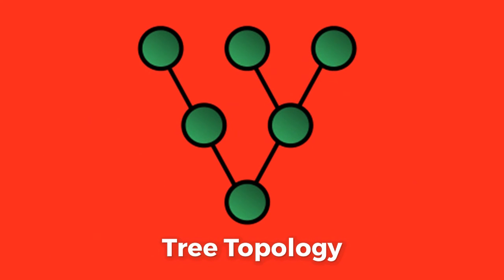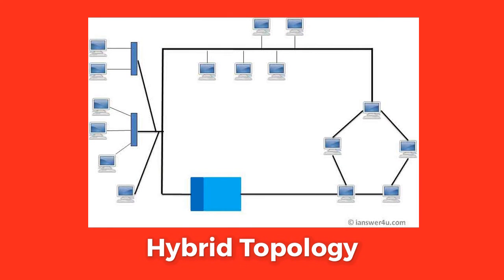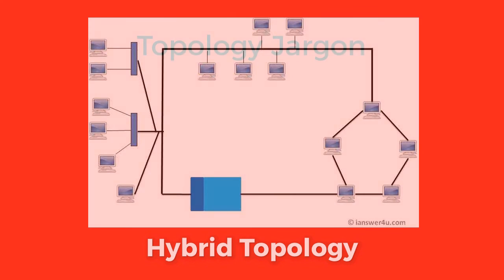Tree topology is essentially a combination of bus and star topology, carrying both the disadvantages of bus topology and the advantages of star topology. Finally, we have the hybrid topology, which can be a mixture of any type of topology discussed earlier.